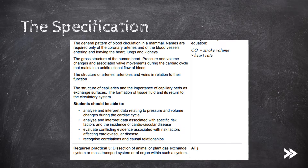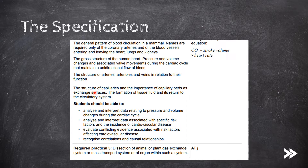In this video we'll look at the general pattern of blood circulation in a mammal, the structure of the human heart, and the pressure and volume changes and associated valve movements during the cardiac cycle. We'll also cover the structure of arteries, arterioles and veins in relation to their function, the structure of capillaries and the importance of capillary beds as exchange surfaces, as well as the formation of tissue fluid and its return to the circulatory system.